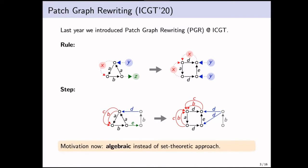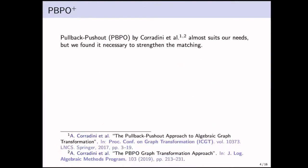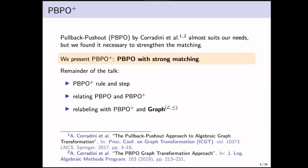Now, when we introduced this last year, we had a set-theoretic approach, and we have a very visual semantics. And for this year, we wanted to have an algebraic rather than a set-theoretic approach. The resulting formalism is called PBPO+, because we found out that pullback pushout by Corradini and his colleagues almost suited our needs, but we found it necessary to strengthen the matching mechanism.